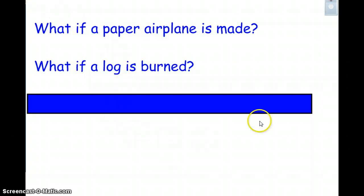A couple other examples. What if a paper airplane is made? This is a physical change. We still have paper, no matter is being created, no matter has been destroyed, conservation of matter still applies here.